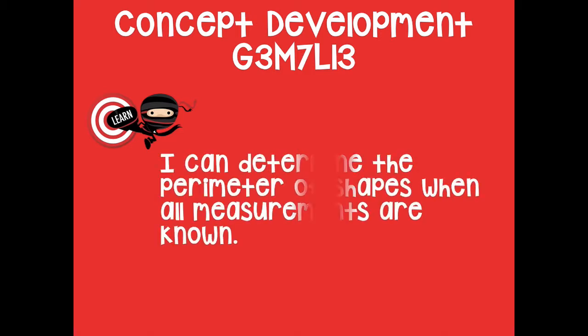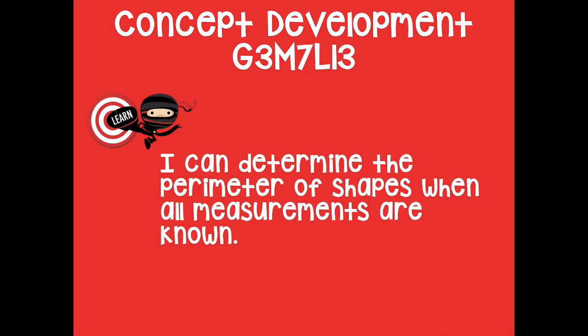Our learning goal for today says I can determine the perimeter of shapes when all measurements are known. So that means if it's a triangle, all three sides are going to be given to you. If it's a square, you're going to have all four side lengths given to you already.